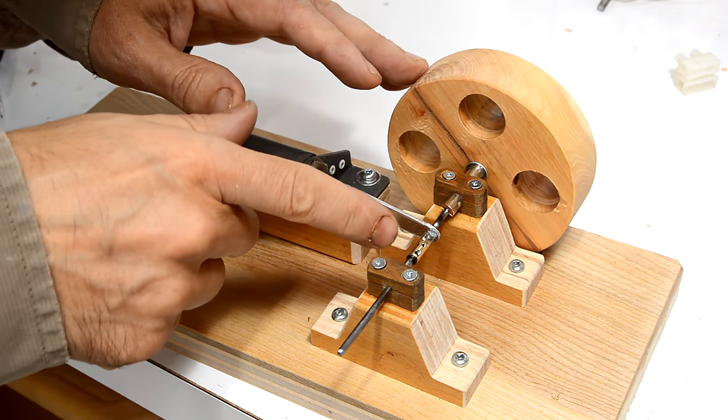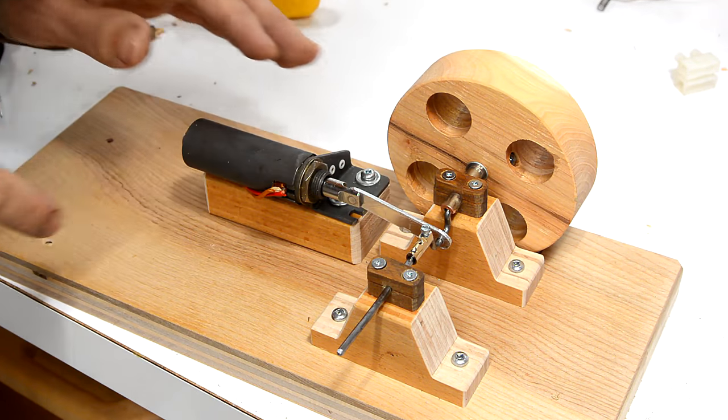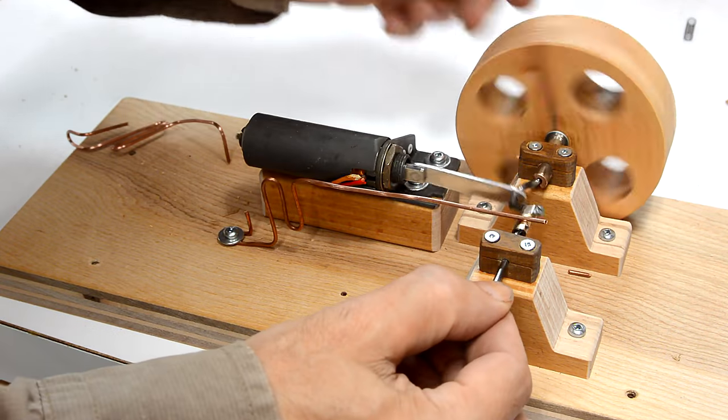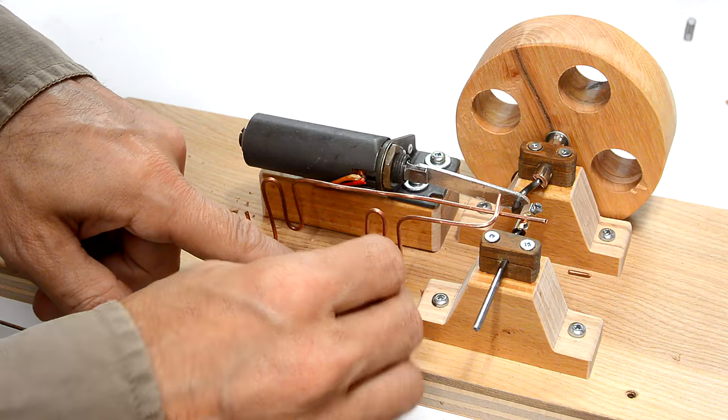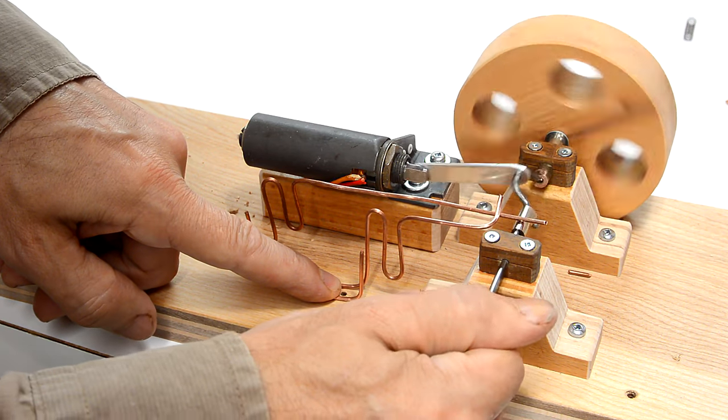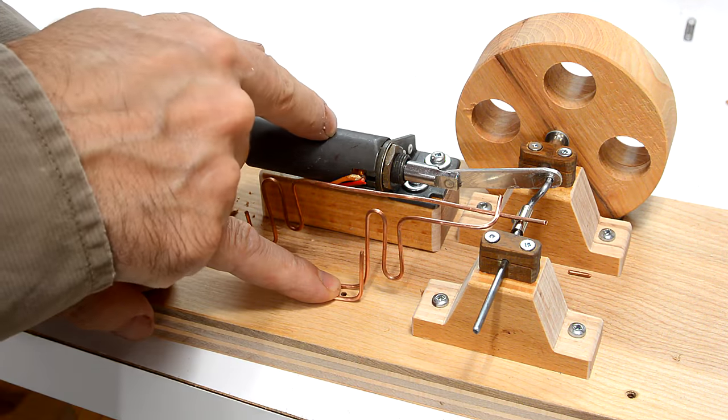Now, I just need some electrical contacts to activate off the cam here. This copper wire rides on the cam and moves up and down. And this one will contact the other wire when it's in the upper position to close the circuit and activate the solenoid.